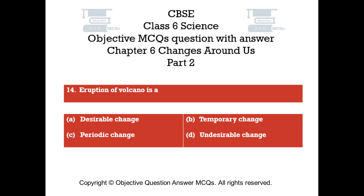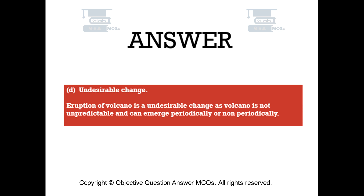Question number 14. Eruption of volcano is a — Option A: desirable change. Option B: temporary change. Option C: periodic change. Option D: undesirable change. The right answer is Option D: undesirable change. Eruption of volcano is an undesirable change, as a volcano is unpredictable and can emerge periodically or non-periodically.